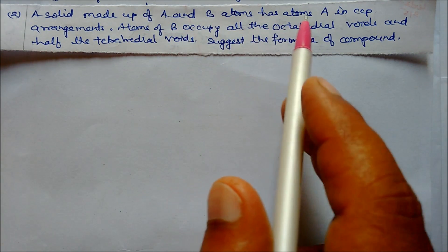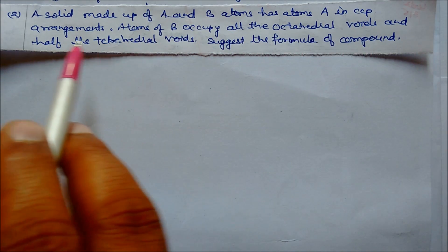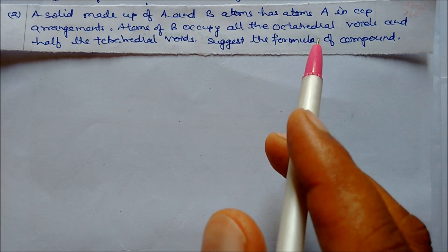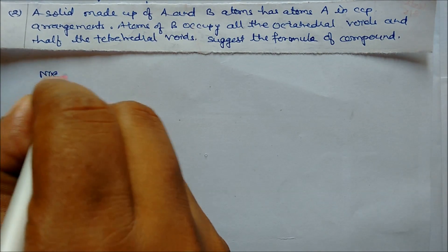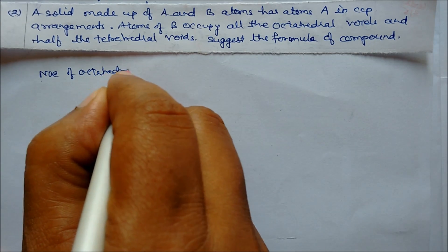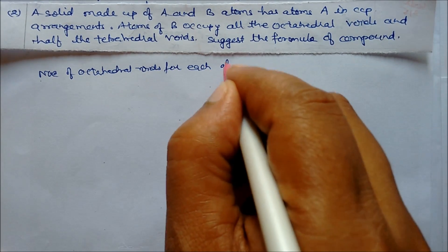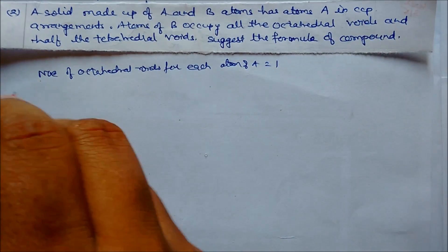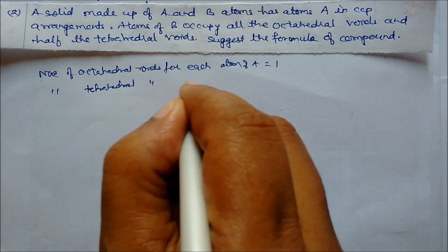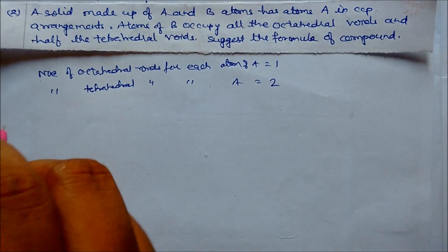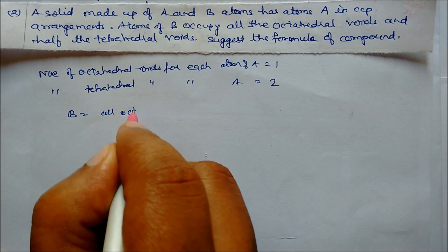Next problem: A solid made up of A and B atoms has atoms A in CCP arrangement and B atoms occupy all the octahedral voids and half the tetrahedral voids. Suggest the formula of the compound. The number of octahedral voids per atom of A is 1. Similarly, the number of tetrahedral voids per atom of A is 2.